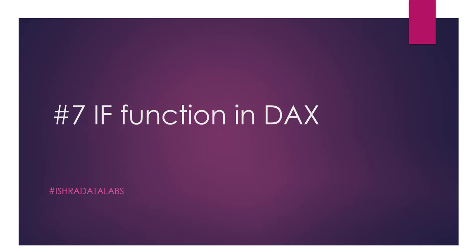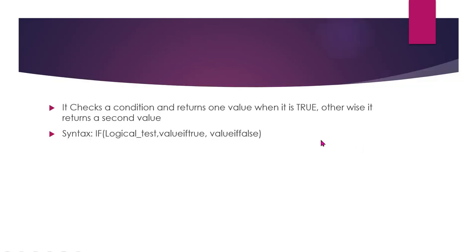Let me share the IF function syntax and documentation first. Okay, so first: IF checks a condition and returns one value when it is true; otherwise it returns a second value. So when a condition is true, it gives one value; when it is false, it gives another value. Simple and straightforward.